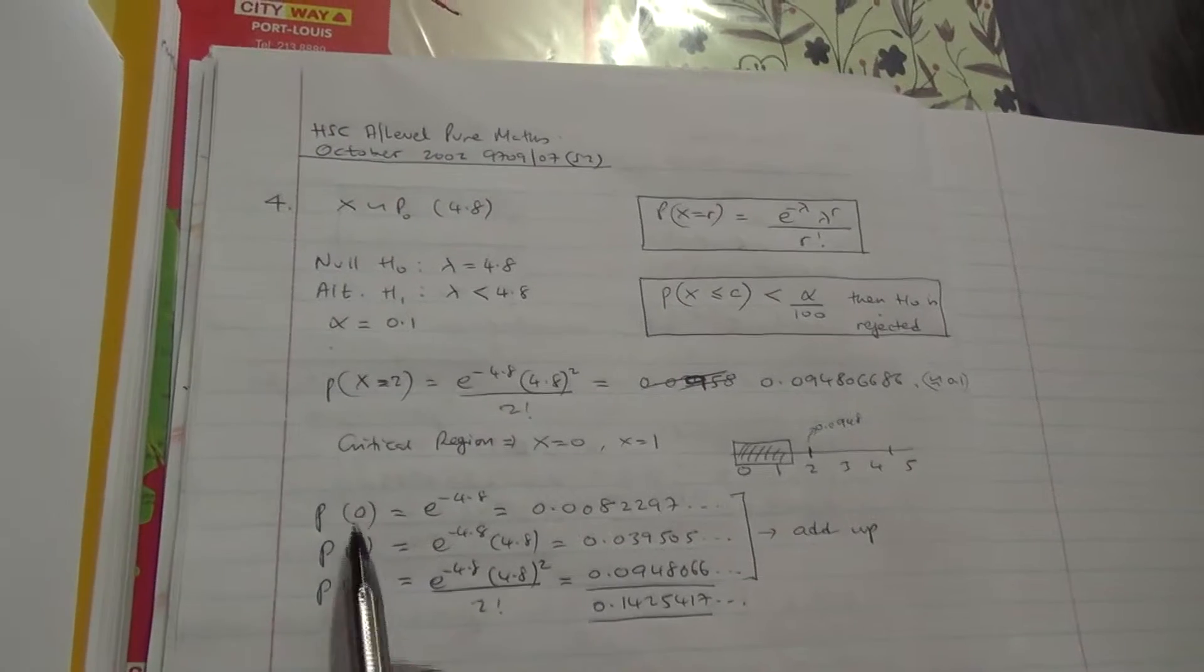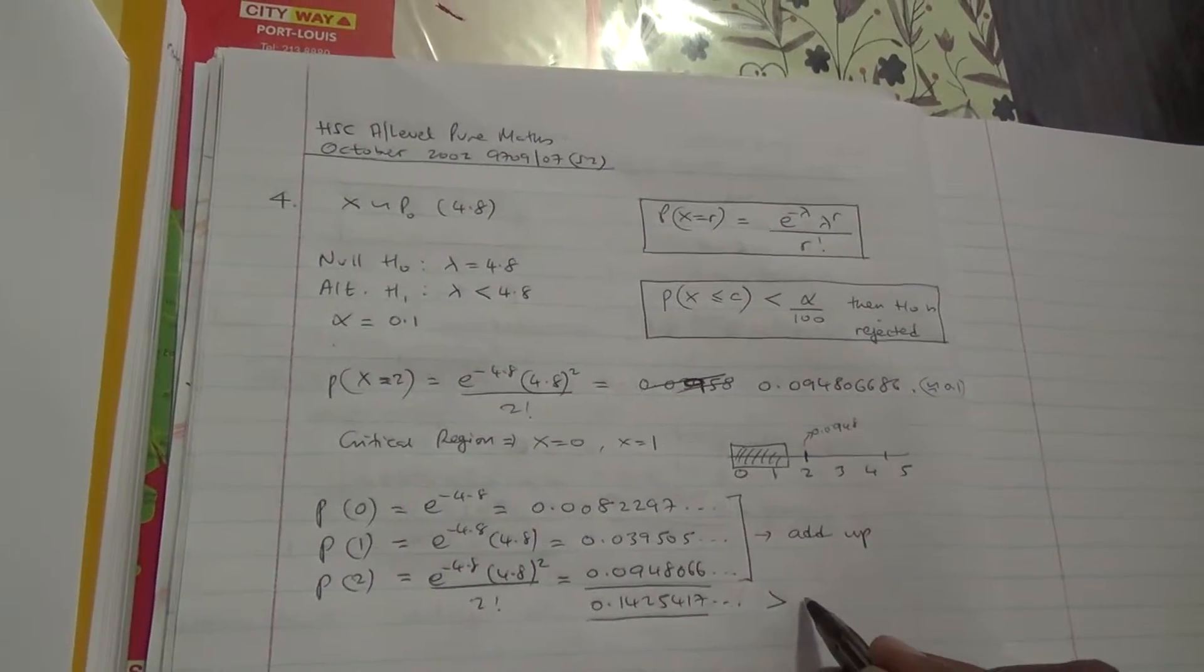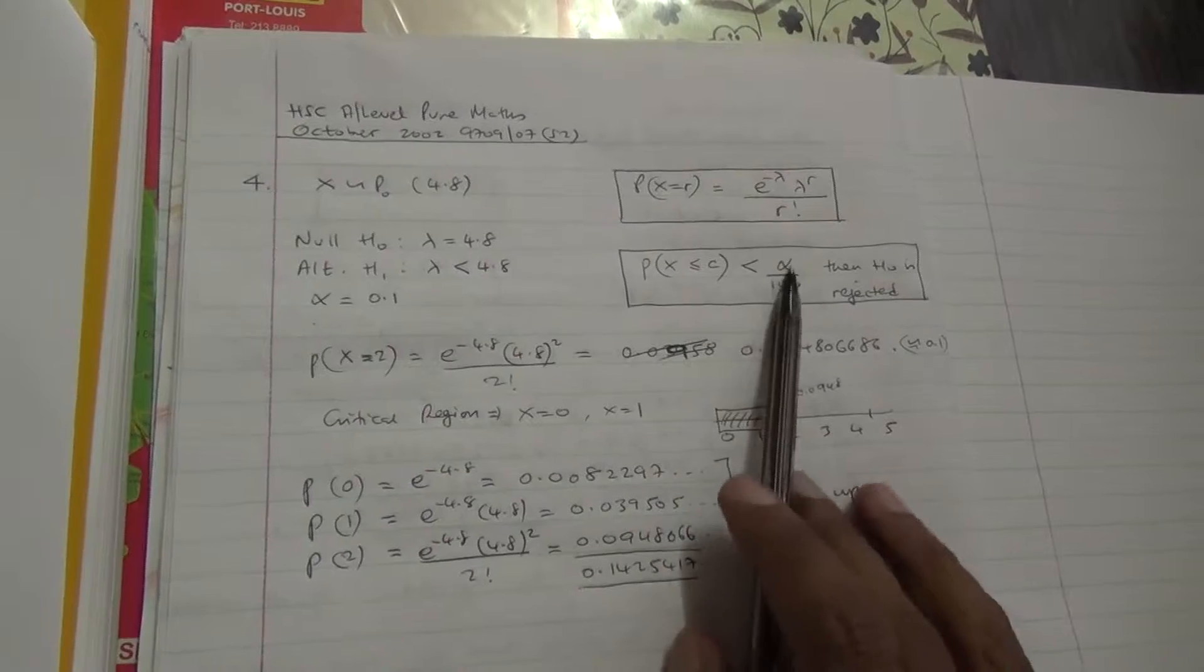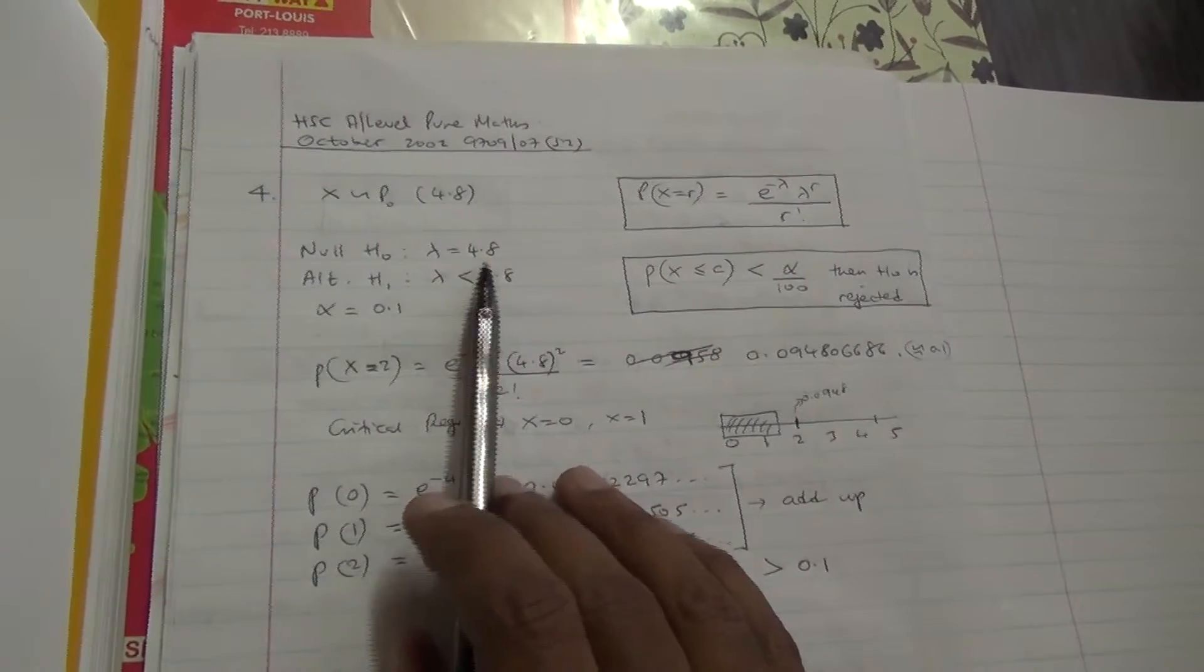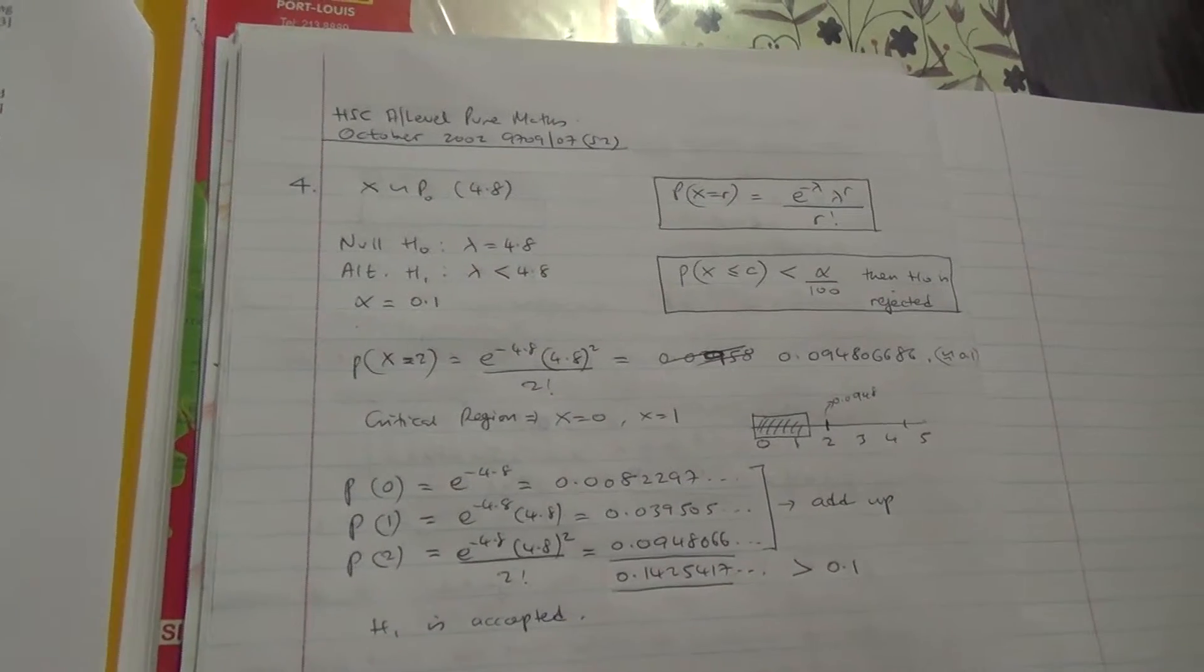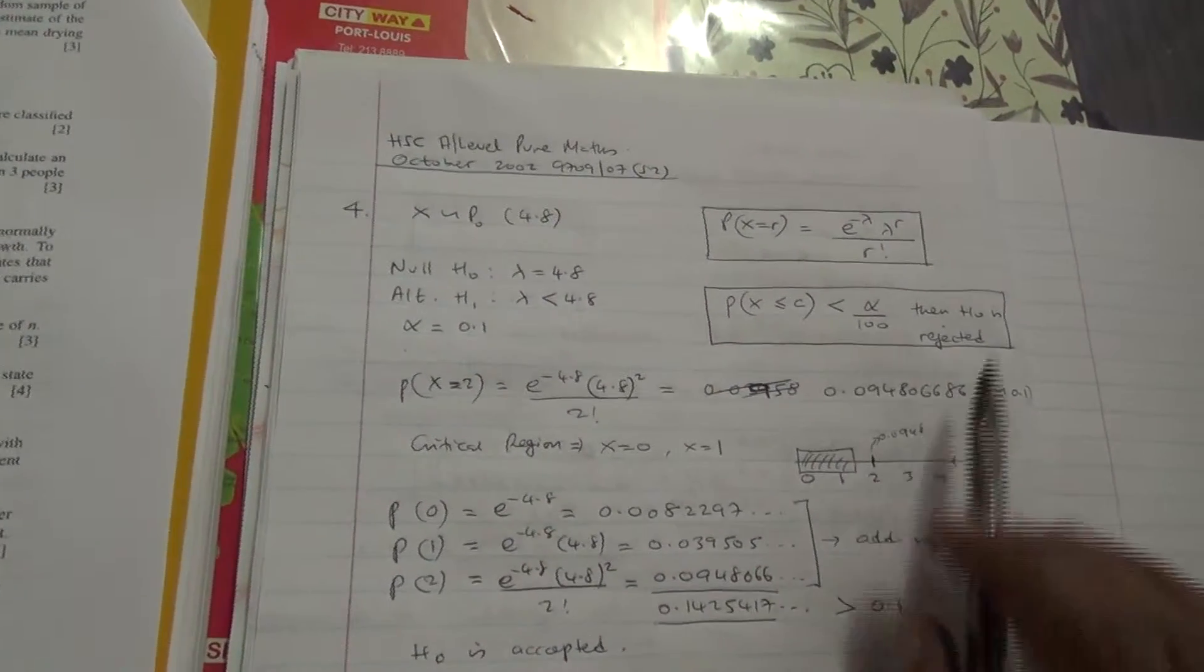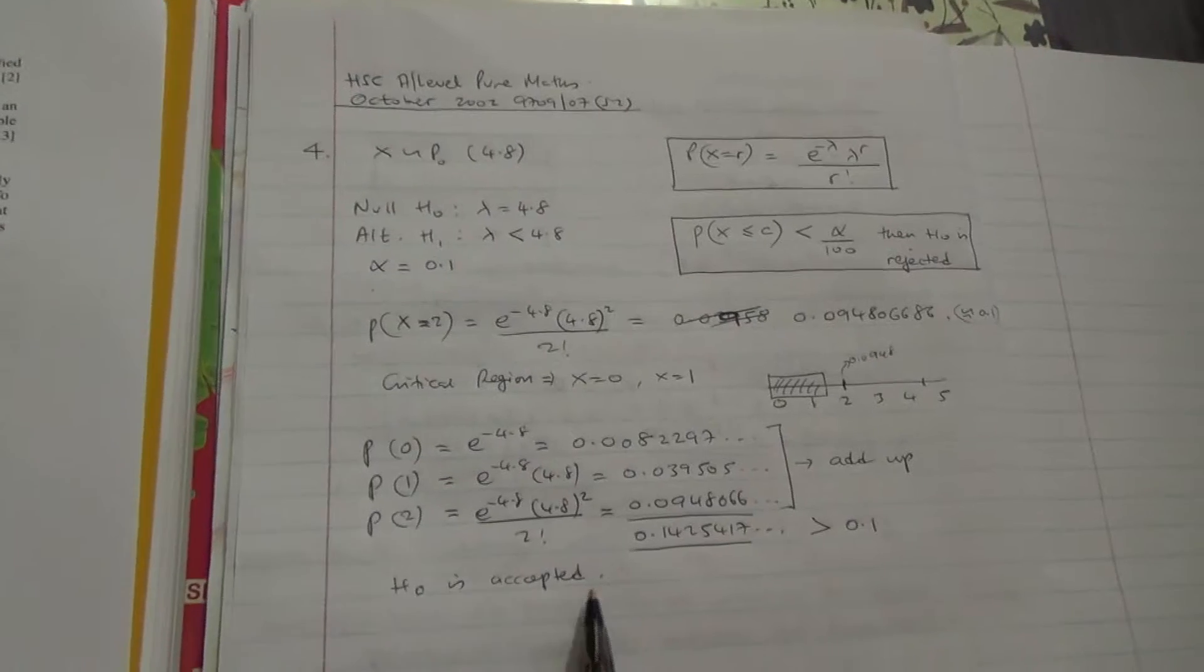Now, this probability of having zero accident, 1 or 2, but not 3 because it is less or equal to 2, is greater than 0.1. Now, what we should realize from this chapter is that if the probability of X being less or equal to the critical region is less than the significant level, then H0 is rejected, meaning that the null hypothesis 4.8 will be rejected. But in our case, it's greater than 0.1. Therefore, H0 is accepted.